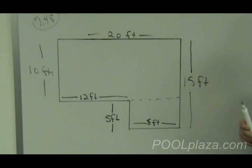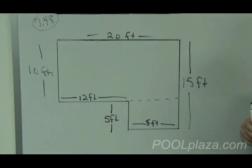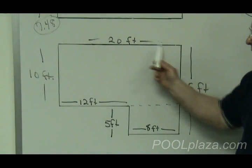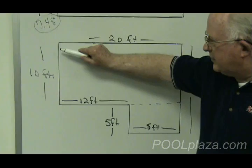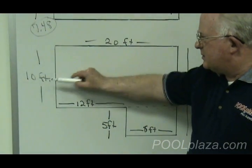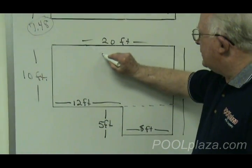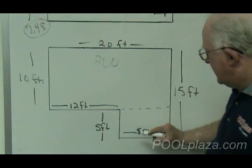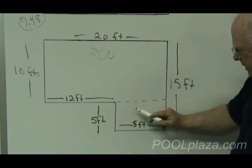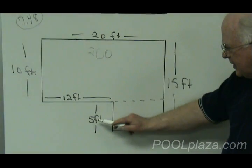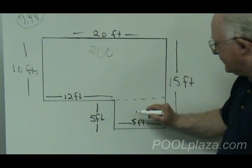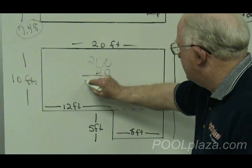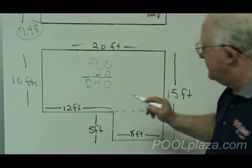Figure the surface area first, and then continue with the formula. So surface area is length, 20 feet, times width, 10 feet. 20 times 10 is 200. And then the surface area of the smaller rectangle, 8 feet length, times 5 feet width, is 40 square feet. So the surface area is 240 square feet.